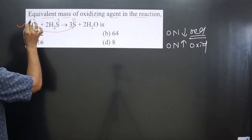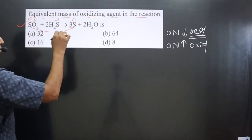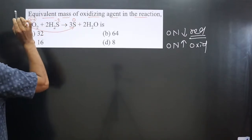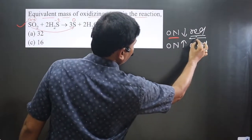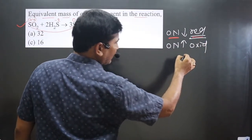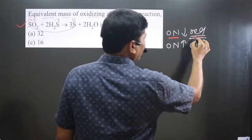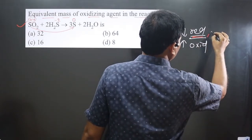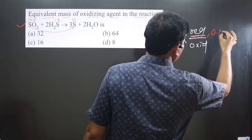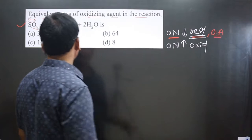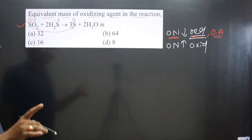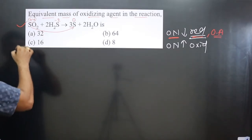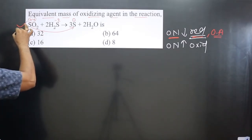Comparing the oxidation number of sulfur: in SO₂ it is +4, and in elemental sulfur it is 0. So we see a decrease in oxidation number from +4 to 0. Decrease in oxidation number is always a reduction reaction, and the substance undergoing reduction always acts as the oxidizing agent. Therefore, since SO₂ is undergoing reduction, it is acting as the oxidizing agent.